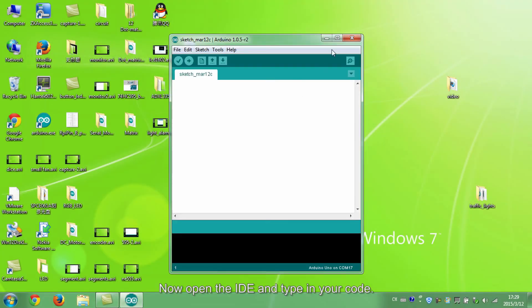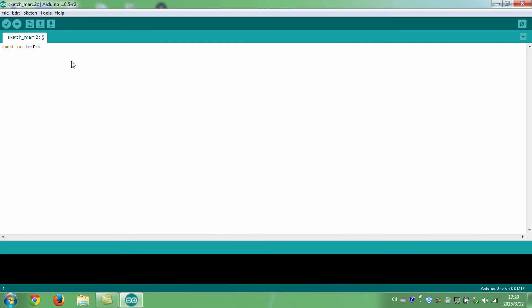Now, open the IDE and type in your code. Since the SunFounder UNO board itself already has an LED connected to pin 13, we don't need to use another LED.